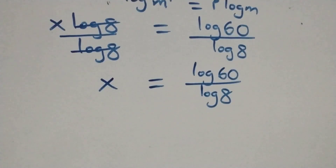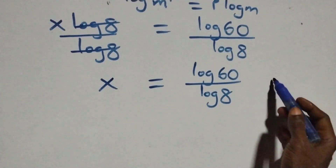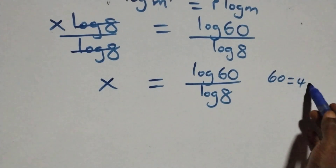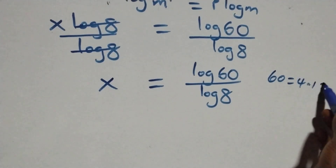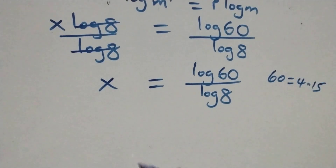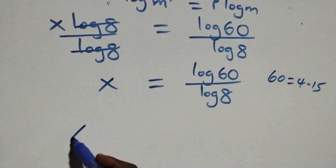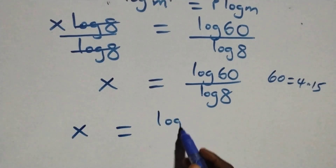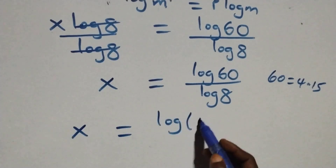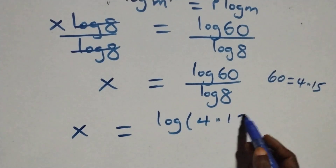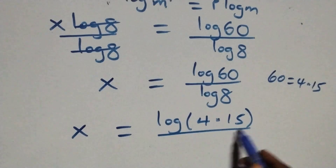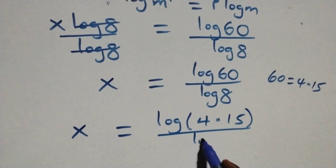That is, next step here, 60 can be written as 4 times 15. Which implies we have x equals to log of 4 times 15 over log 8.